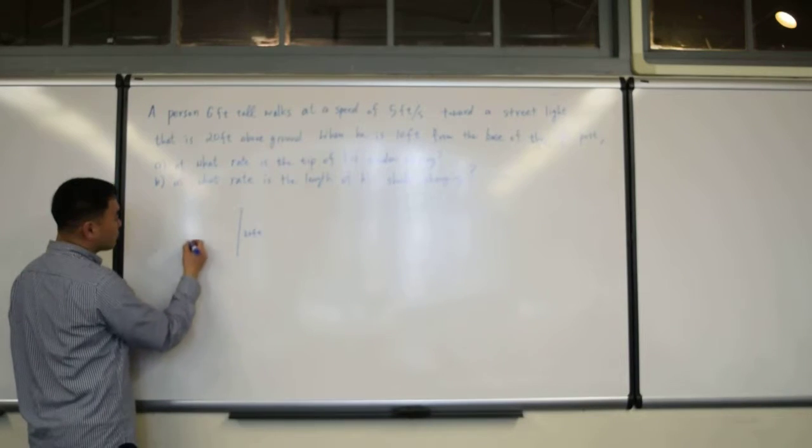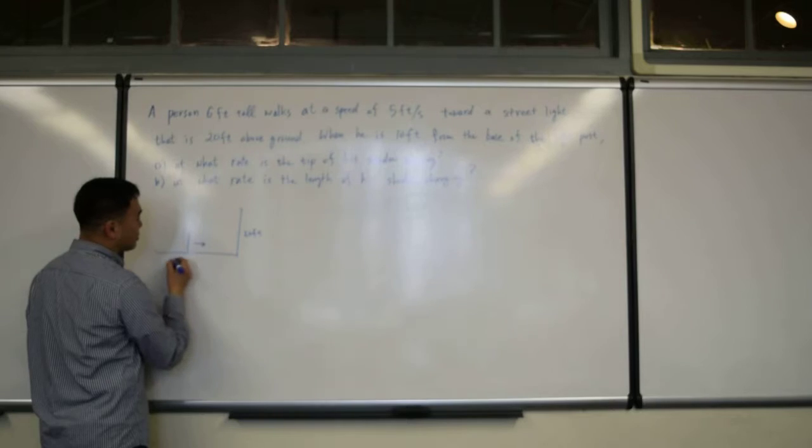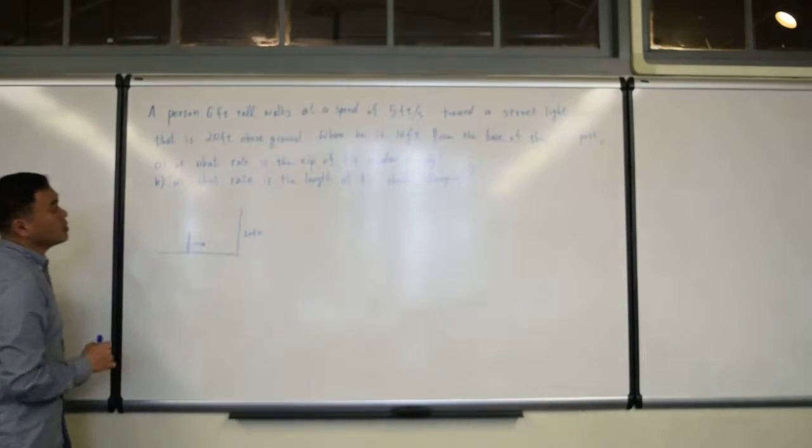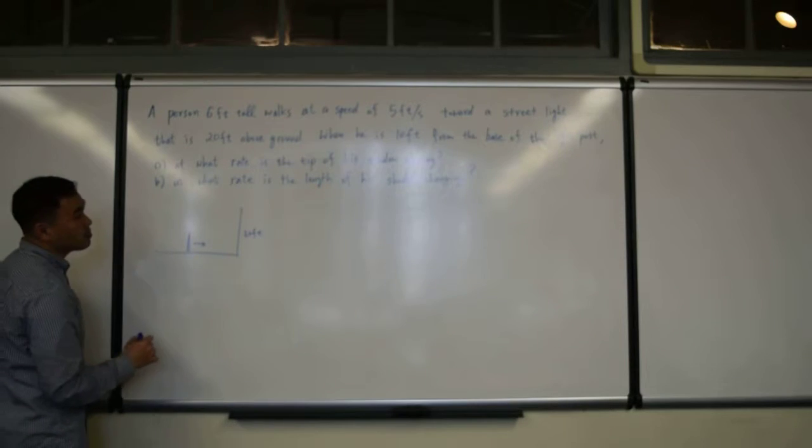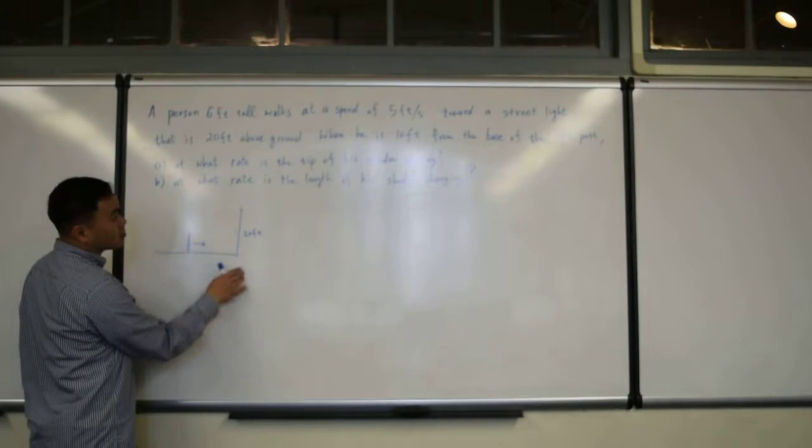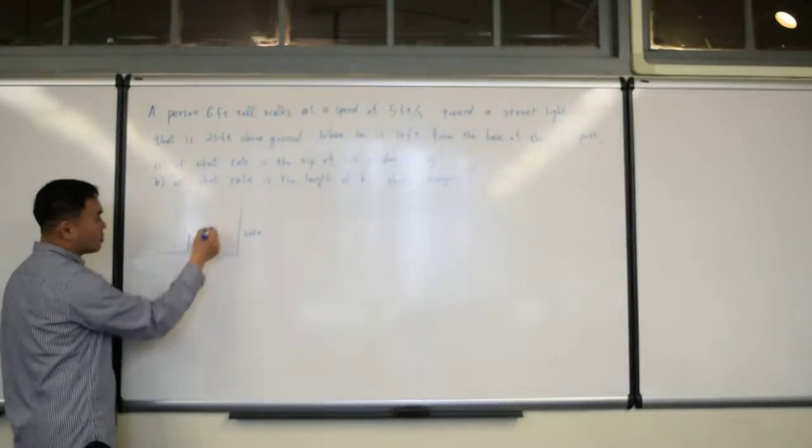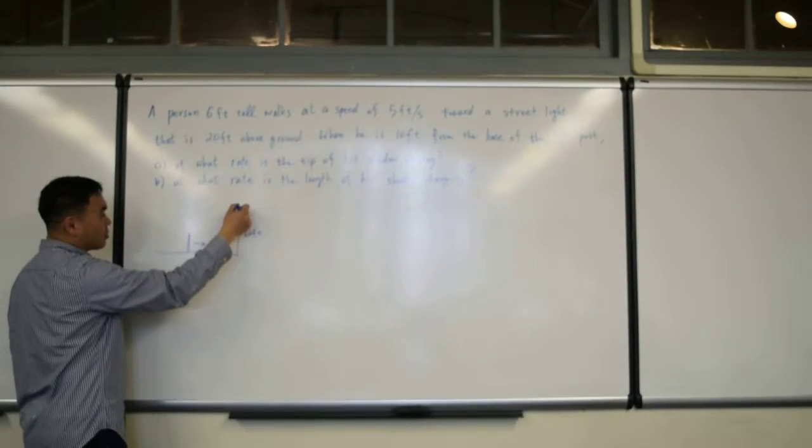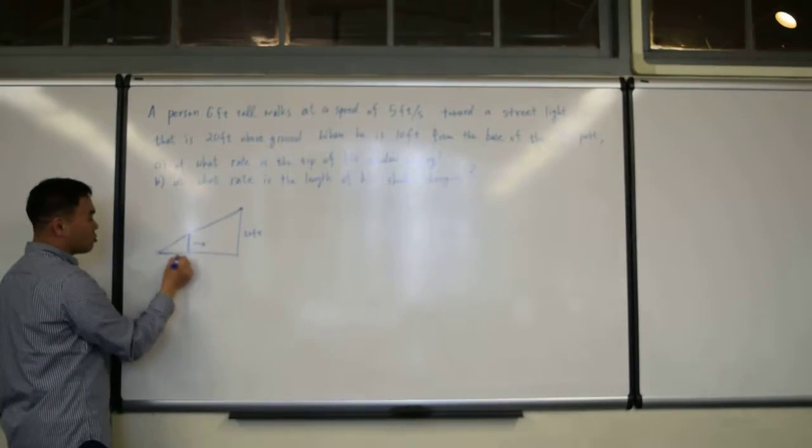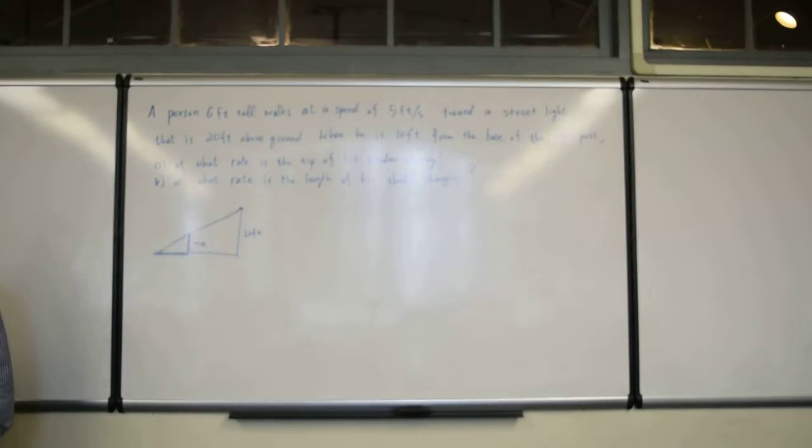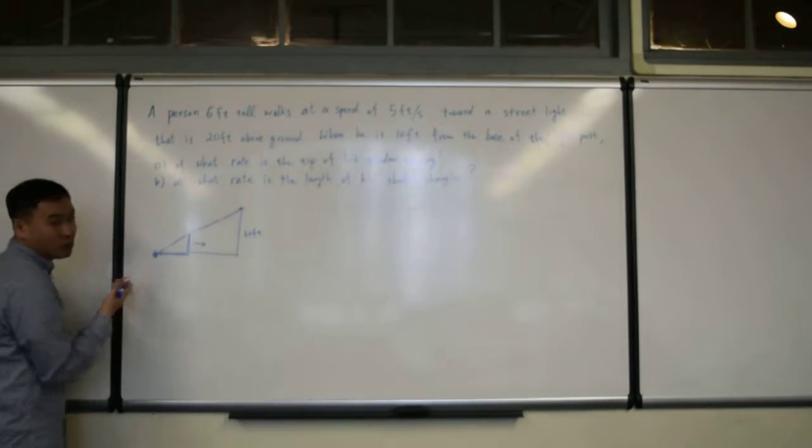And then a person 6 feet tall is walking towards the street light. So this is 6. When it is 10 feet away from the base of the post, at what rate is the tip of his shadow moving? Since this is the light source, you can draw a straight line from the light source and this will be the shadow. The question is how fast is the tip of his shadow moving?